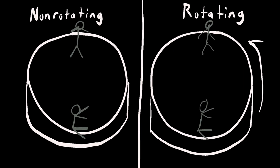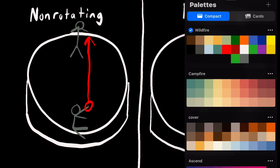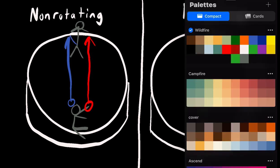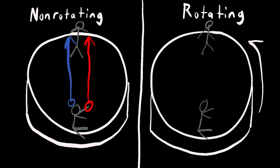On the left, pretend that is a merry-go-round that isn't rotating, and on the right, it's a merry-go-round that is rotating. So let's go to the one on the left first, and let's give this guy a ball — he's going to roll the ball to the other guy. That ball is just going to roll in a straight line, and that is the actual path that it's taking. The perceived path is going to be the exact same.